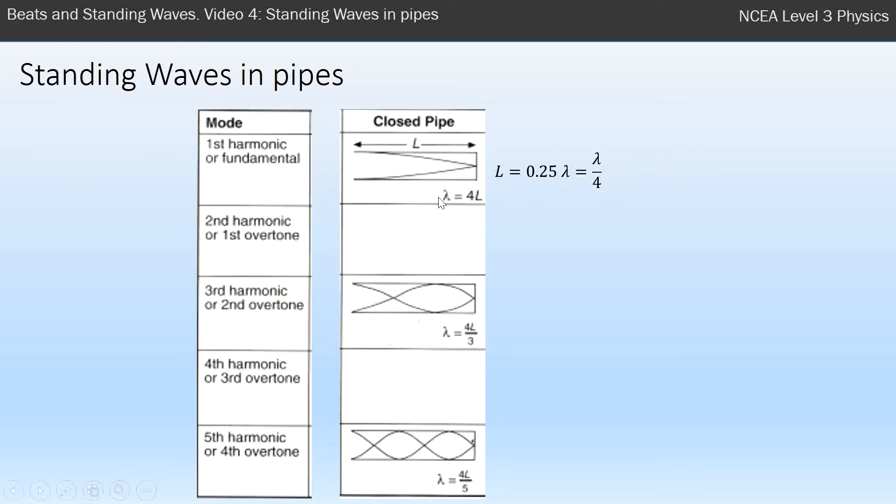That's how I write it: instead of writing lambda equals 4L, I write L equals one quarter of a wave. This one down here, if you keep following this around and then up again, you really see that you've got three quarters of a wave there.